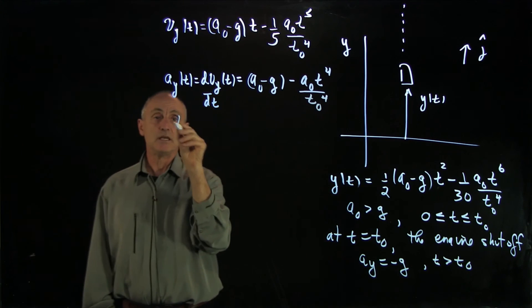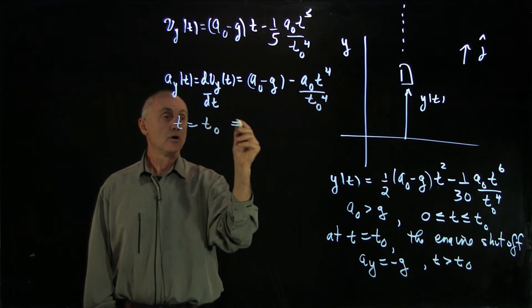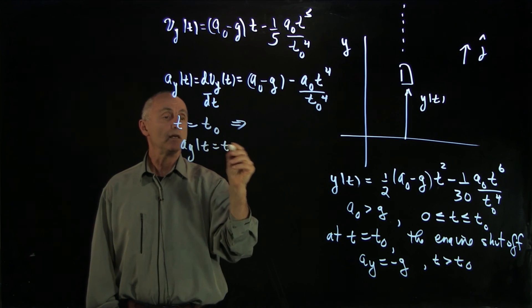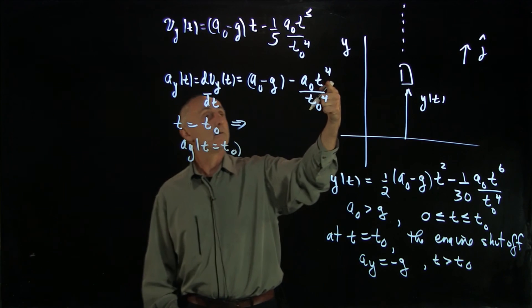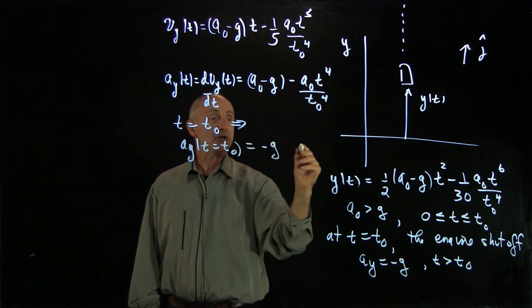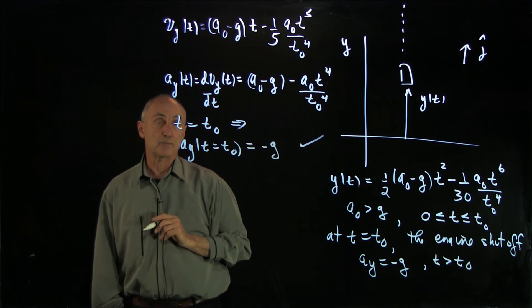At time t equals t0, what do we have? a_y at t equals t0 is just a factor minus a0. Those cancel, and we get minus g, which is what we expected.